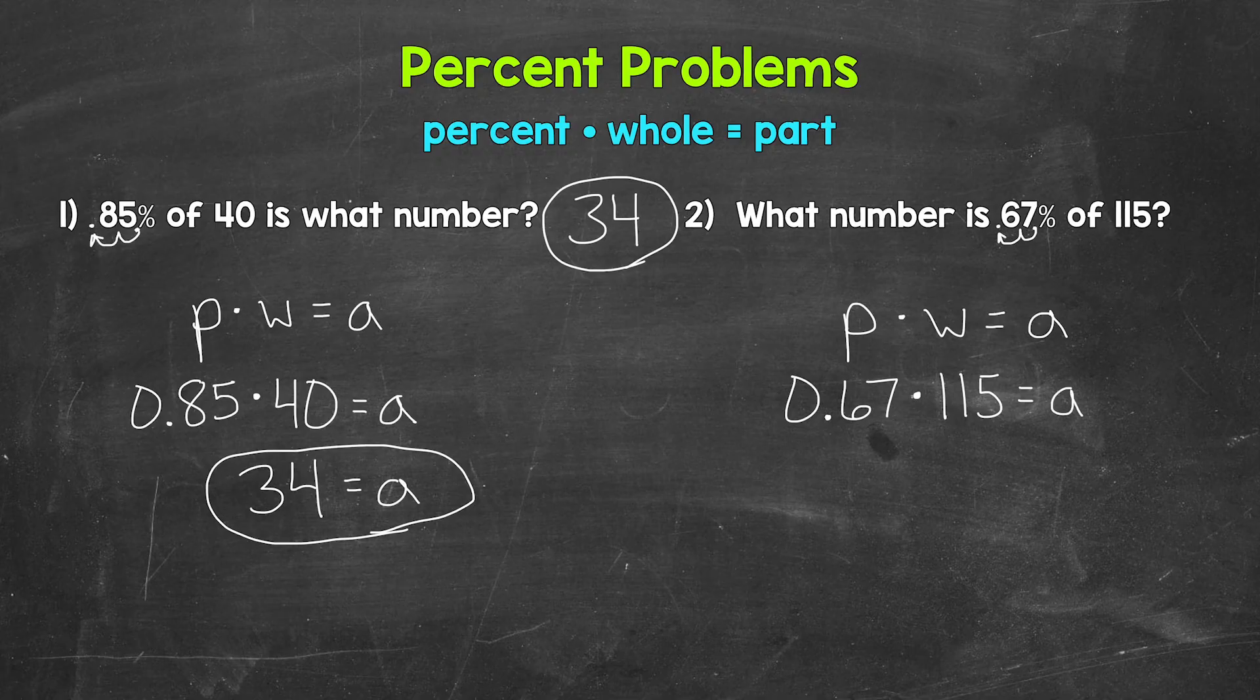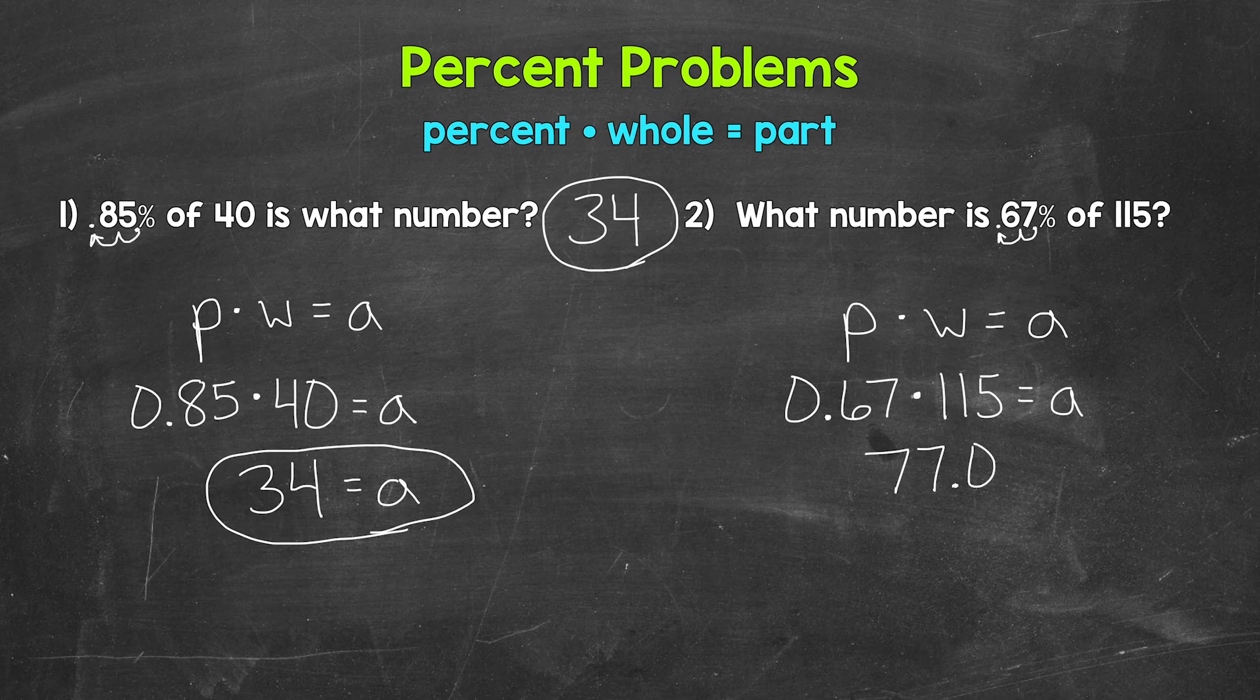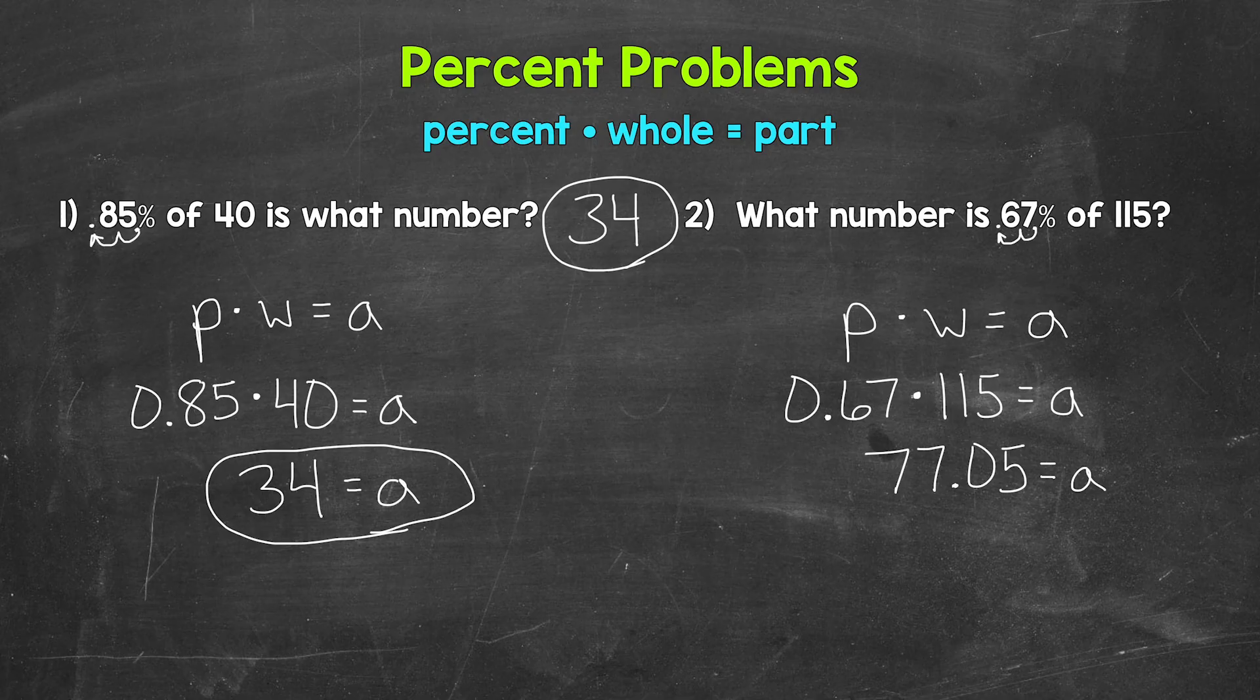And now we solve. Our variable a is isolated on the right side of the equation. So all we need to do is multiply on the left. We have 67 hundredths times 115. That gives us 77.05. So a equals 77 and five hundredths.